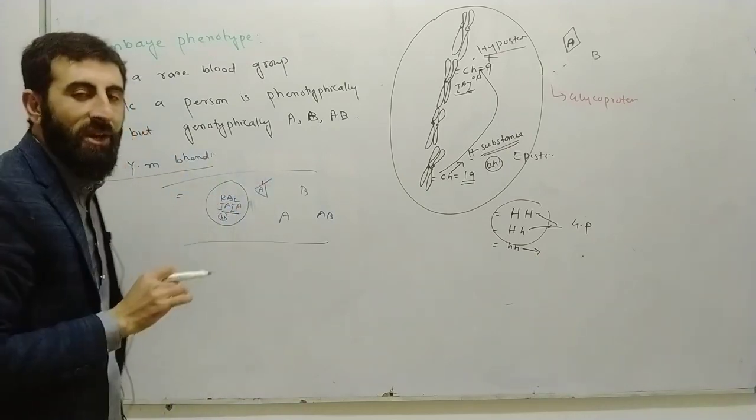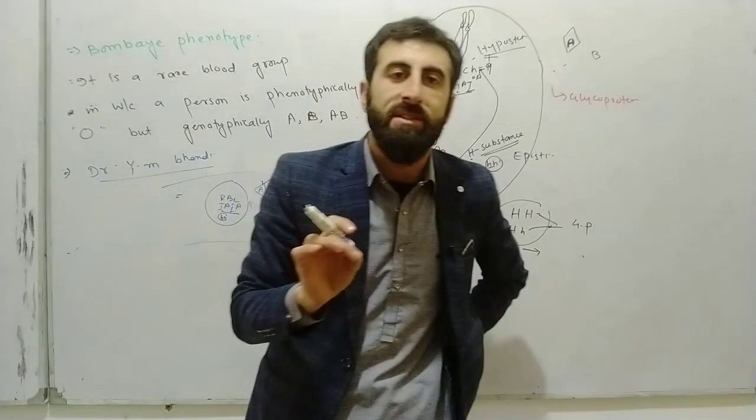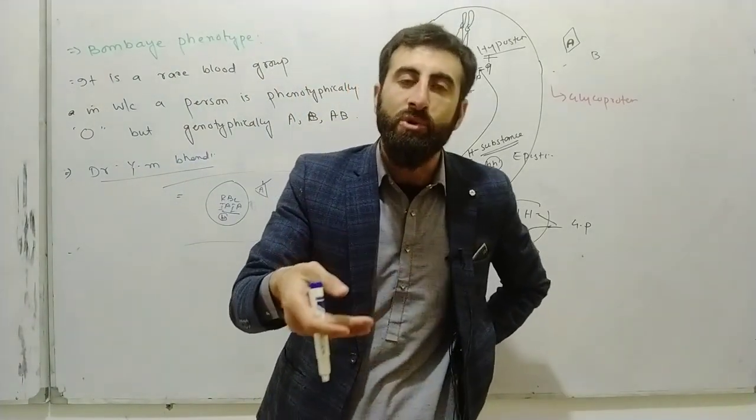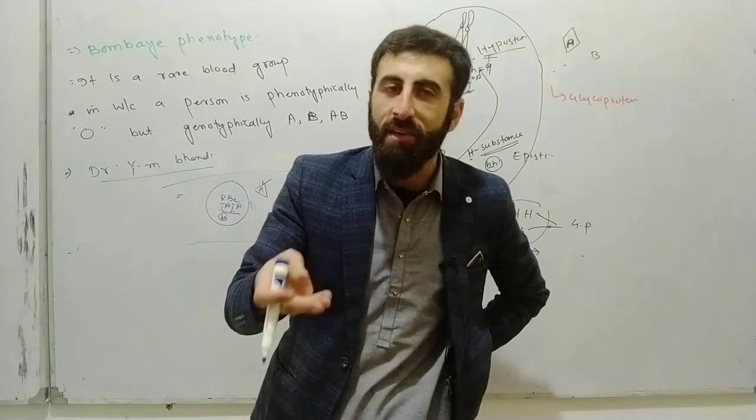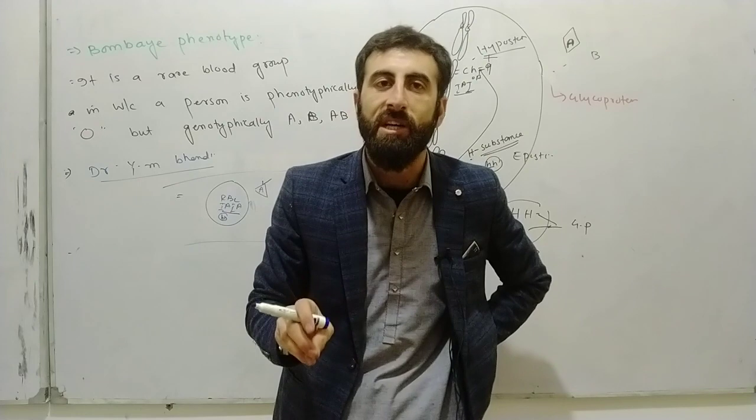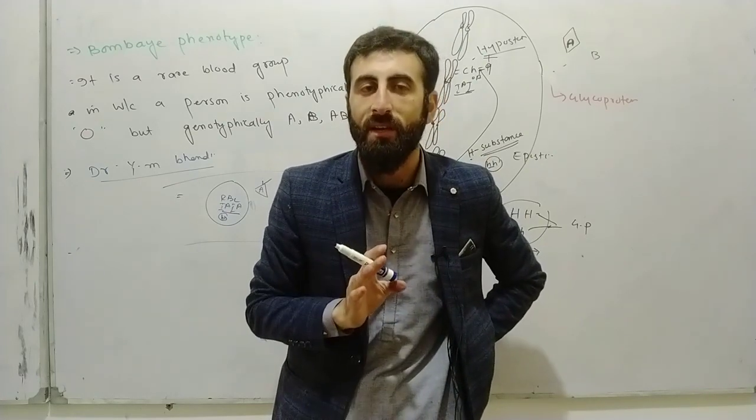Then there will be no antigen on the RBC surface, so the blood group appears as O. This is the condition for that person - it's called O blood type. But if there's no antigen B either, this is called the Bombay phenotype. You can write this as the phenotype.